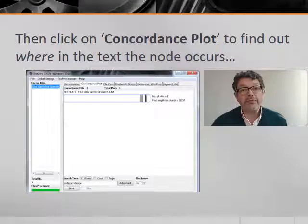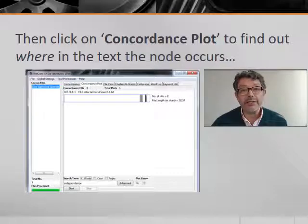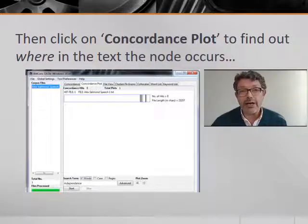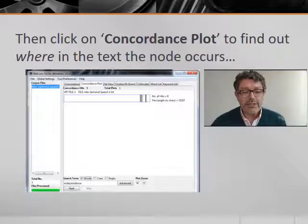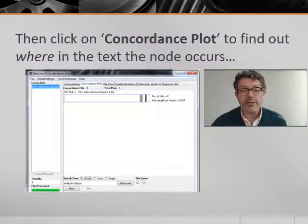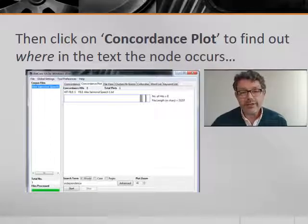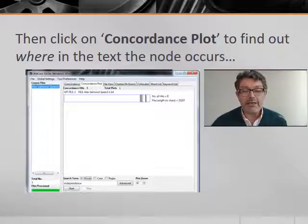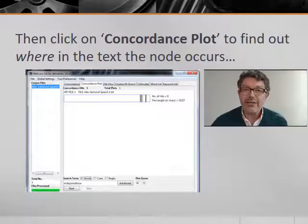So AntConc will tell me the frequency of the word 'independence' in Alex Salmond's speech and give me concordance lines that demonstrate how he uses it. But let's say I also want to know where in the text the word 'independence' appears. I click on Concordance Plot and find immediately that the word is bunched up towards the end of the text.